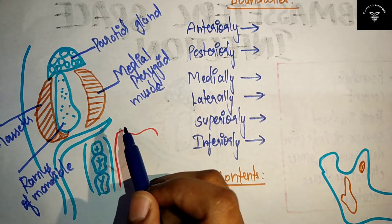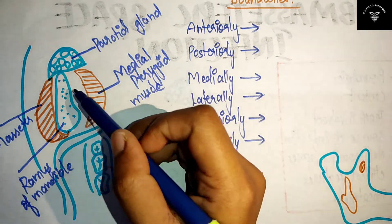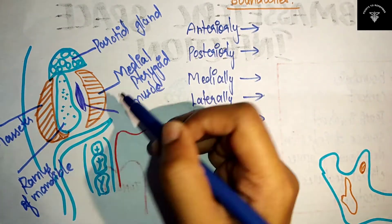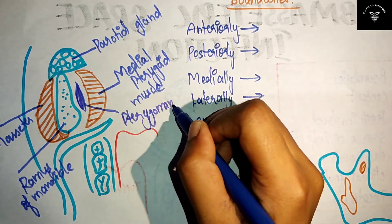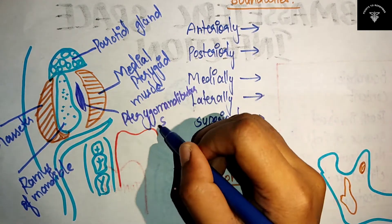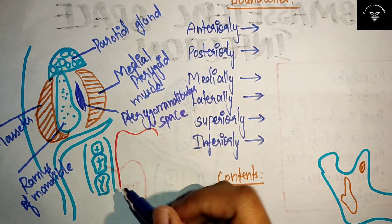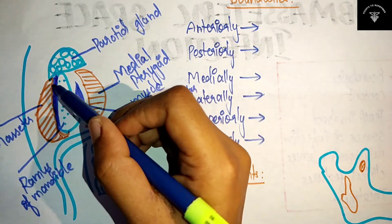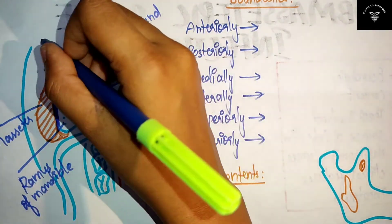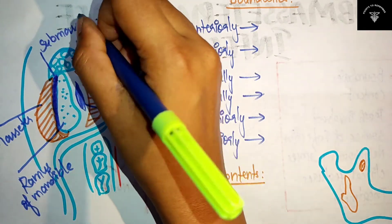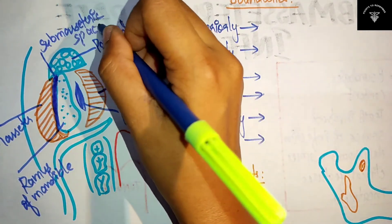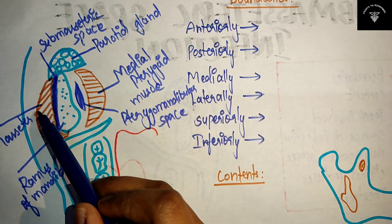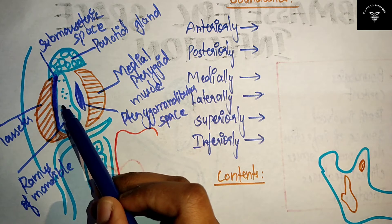Now, where is the submasseteric space? Previously we saw the pterygomandibular space — this space here is the pterygomandibular space. And the submasseteric space is this one — the blue color I have marked will be your submasseteric space. On one side you have the masseter, and here you have your ramus of mandible.